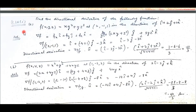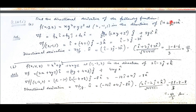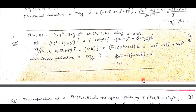In question number 10 first part, we have to find out the directional derivatives of the following functions at the given point in a particular direction. That will be the dot product of the gradient and the unit vector. First find the gradient at the point, then take its dot product with the unit vector. If the given vector is not a unit vector, first divide by its magnitude to make it unit, then take the dot product to get the directional derivative. Same way for parts b and c.